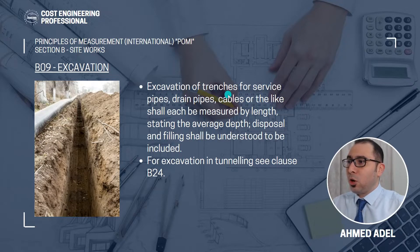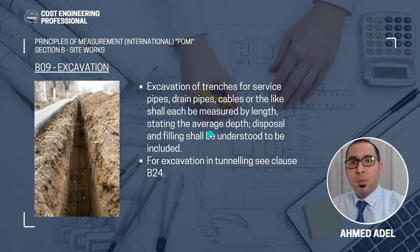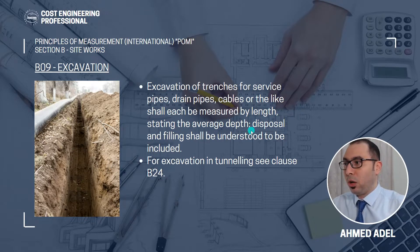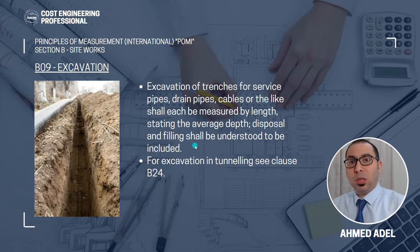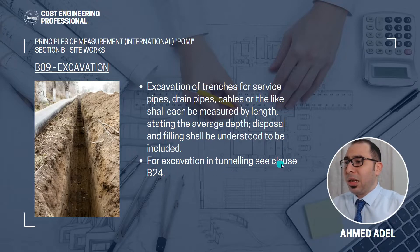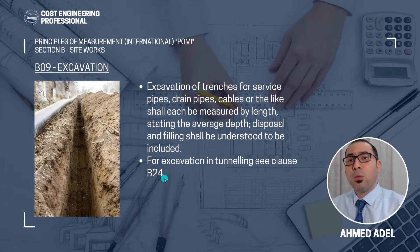Excavation of trenches for service pipes, drain pipes, cables, or the like shall be measured by length, stating the average depth. In that case, disposal and filling shall be understood to be included, and this must be mentioned in the description — the rate against this item shall be understood to include the disposal and filling. For excavation in tunneling, which is subsection 24, we will understand how to calculate the excavation of tunneling as per POMI when we reach that subsection.